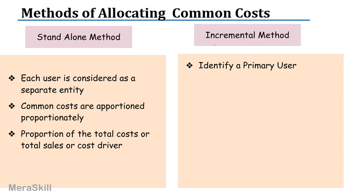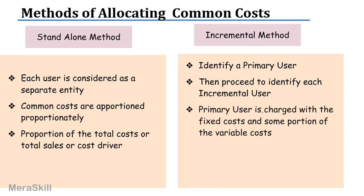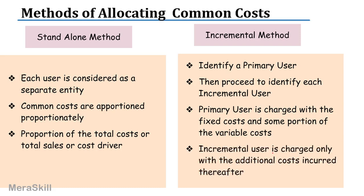In the incremental method, you first identify a primary user and then identify each additional user. The primary user is charged with the fixed cost and the bulk of the cost, because even if the others did not use it, the primary user would have incurred these costs. All additional costs are charged only to the incremental user. The best way to understand this is with an example.